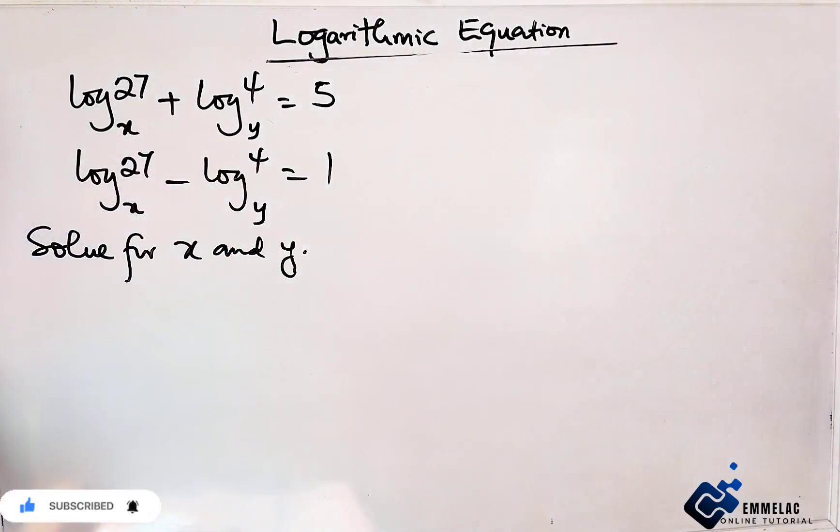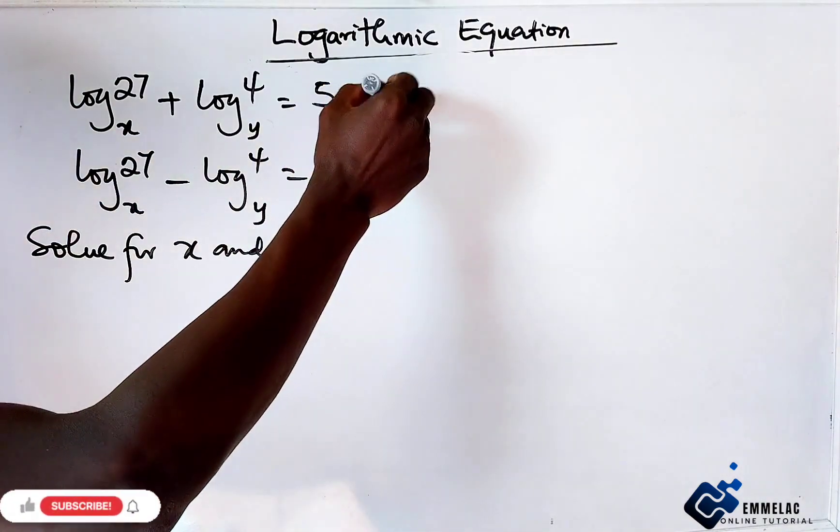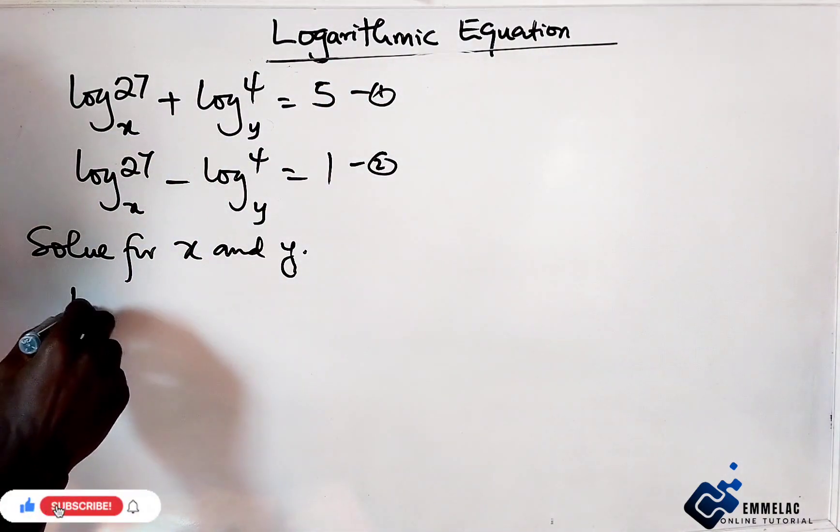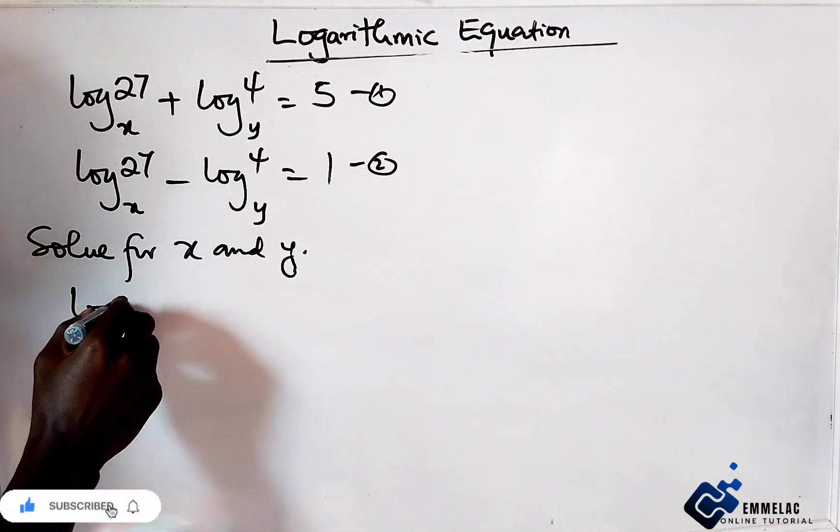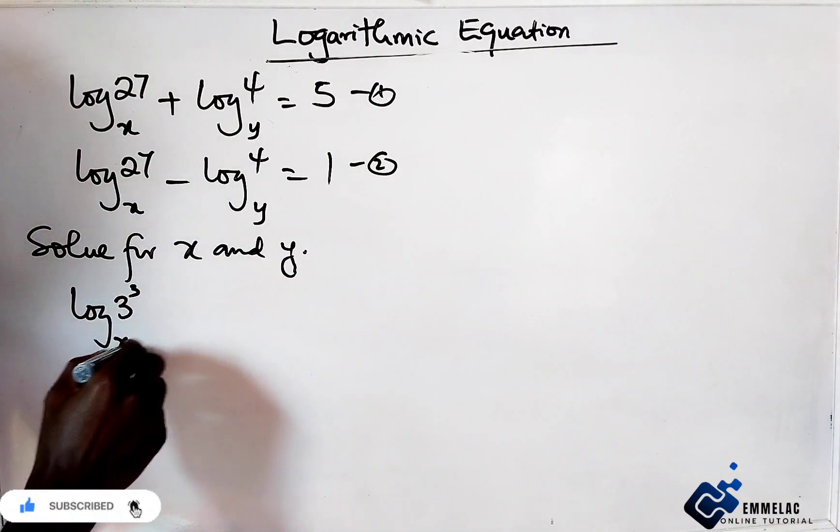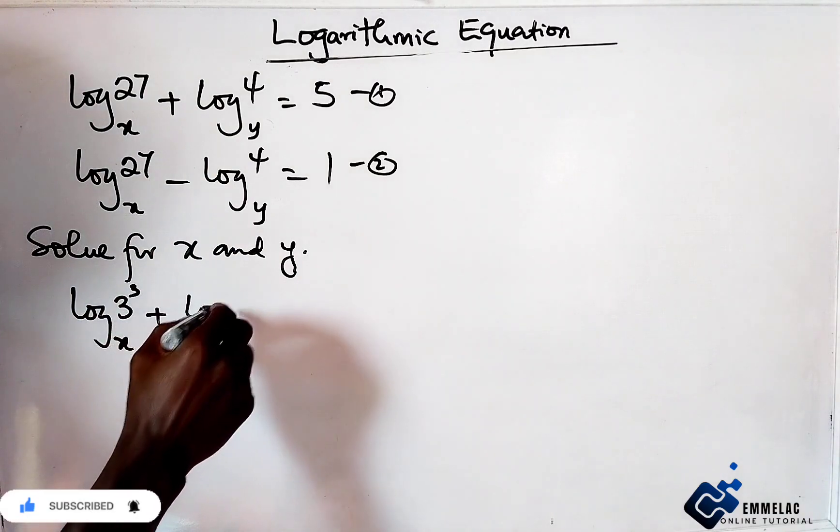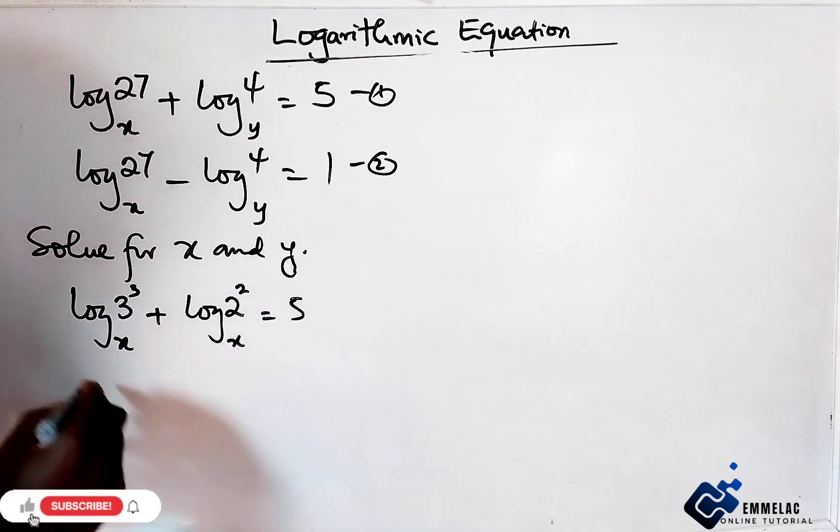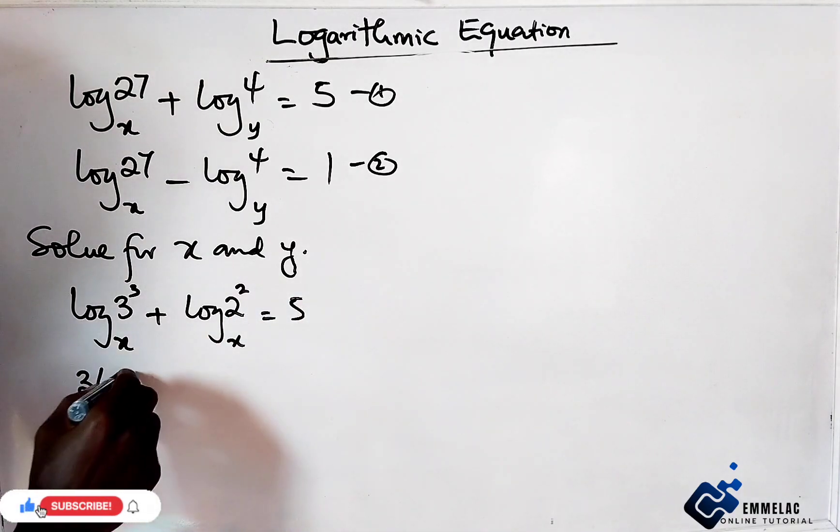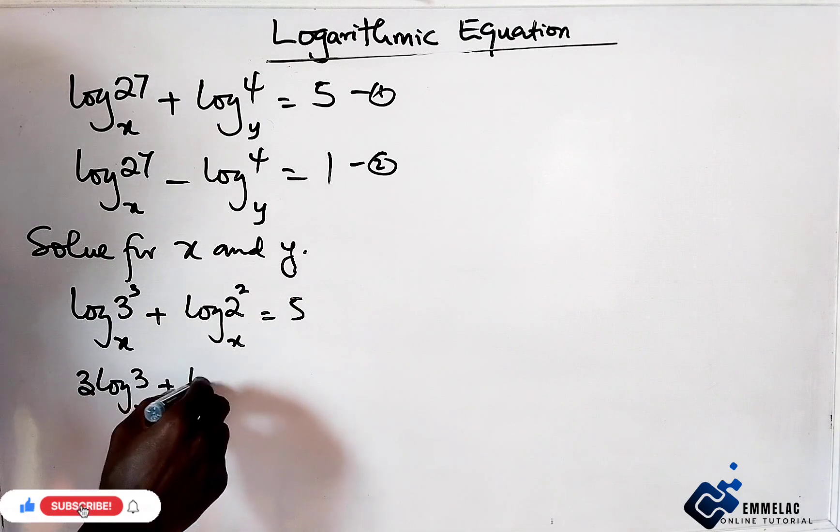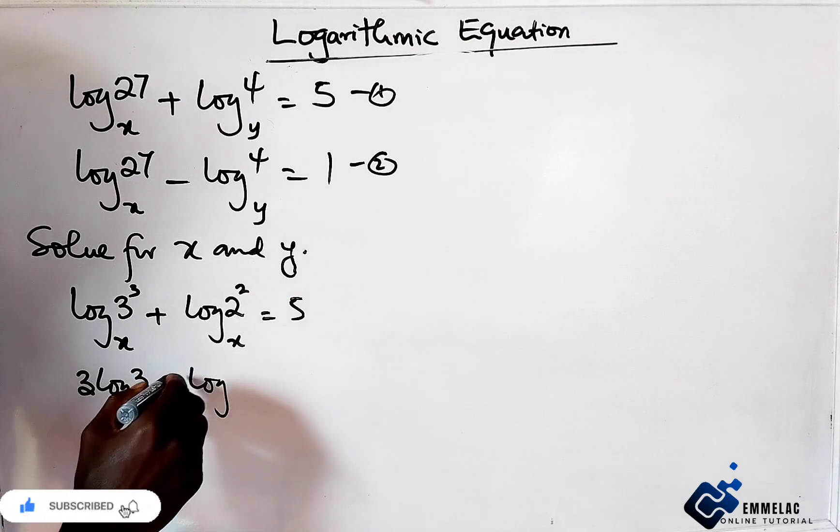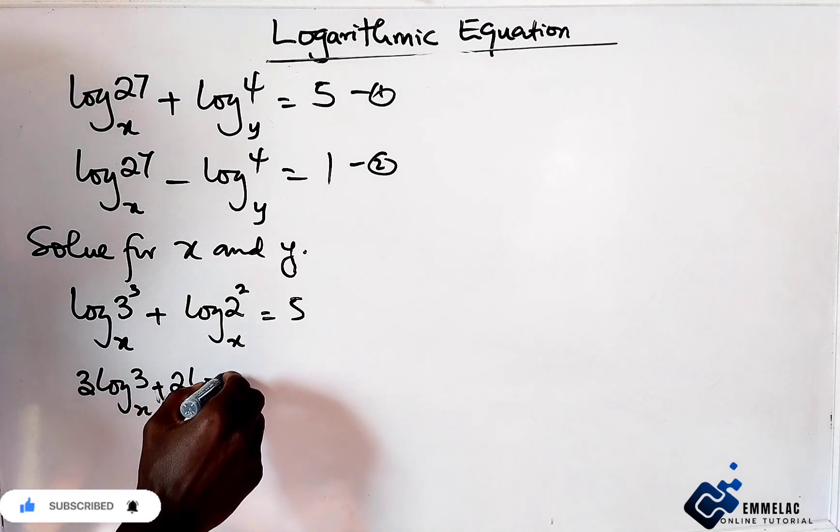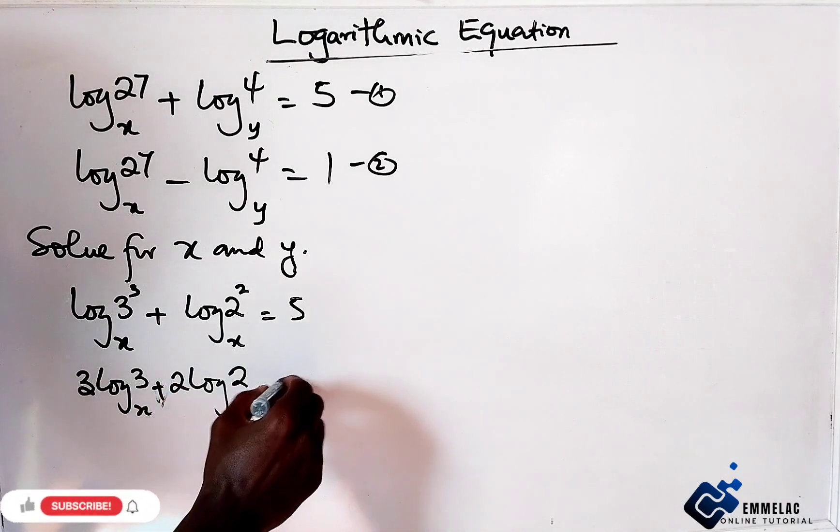Let us simplify these two equations. Equation 1, equation 2. By simplifying and changing to a base of 3, we have log base x of 27 plus log base y of 4 equals 5. This gives us 3 log base x of 3 plus 2 log base x of 2 equals 5.